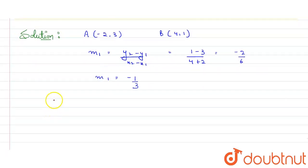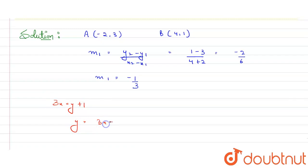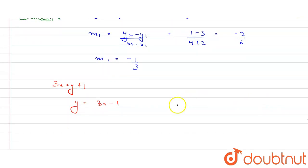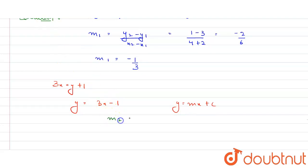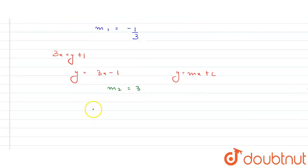Now the equation of the other line is given as 3x = y + 1, which can be written as y = 3x - 1. The general form of a line is y = mx + c, so the coefficient of x is the slope m. Therefore, the slope of this line, m2, equals 3.